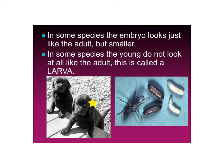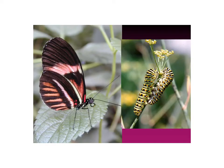Some animals do that; other animals just get bigger — they look the same when they're born and just grow larger. Here's another organism that undergoes a big change: caterpillars eat and eat and grow larger, then go inside a chrysalis, or cocoon. They pupate — that's the word for it — and when they emerge, they look like the adult butterfly.